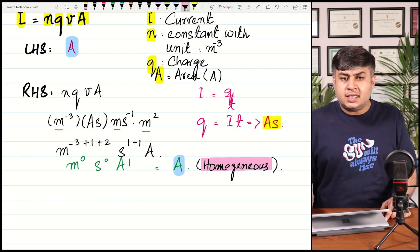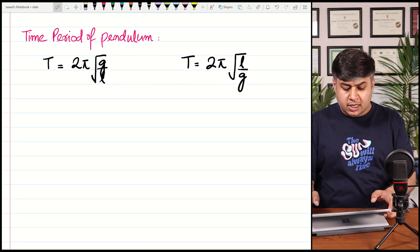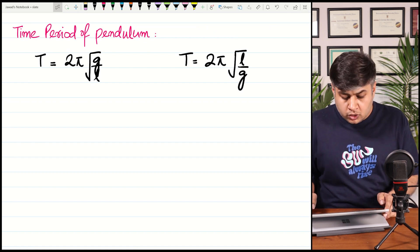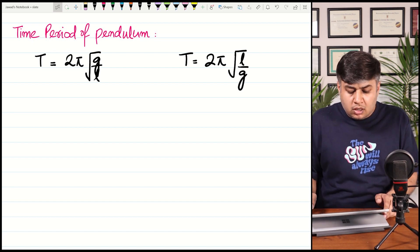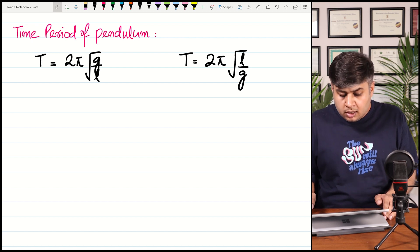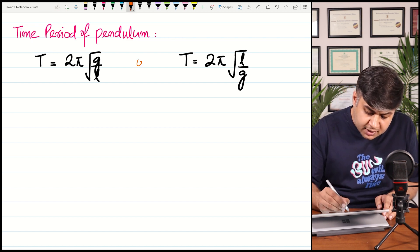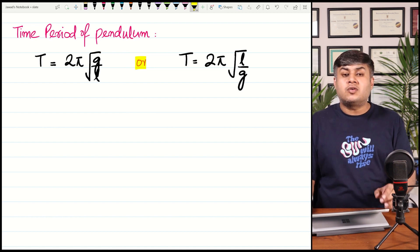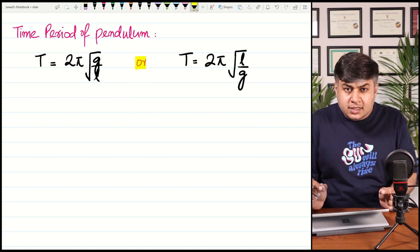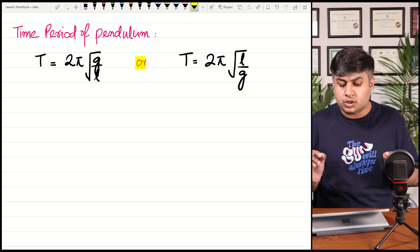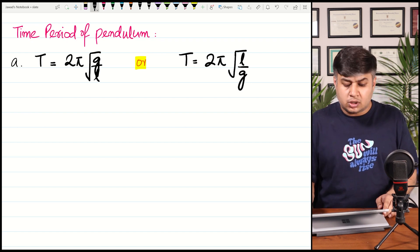I would suggest you pause here and try to solve the next question yourself, then play back the video to check the solution. The question is: the time period of a pendulum is T = 2π√(G/L) or T = 2π√(L/G). One of these equations is correct and one is incorrect on the basis of homogeneity — we have to determine which.